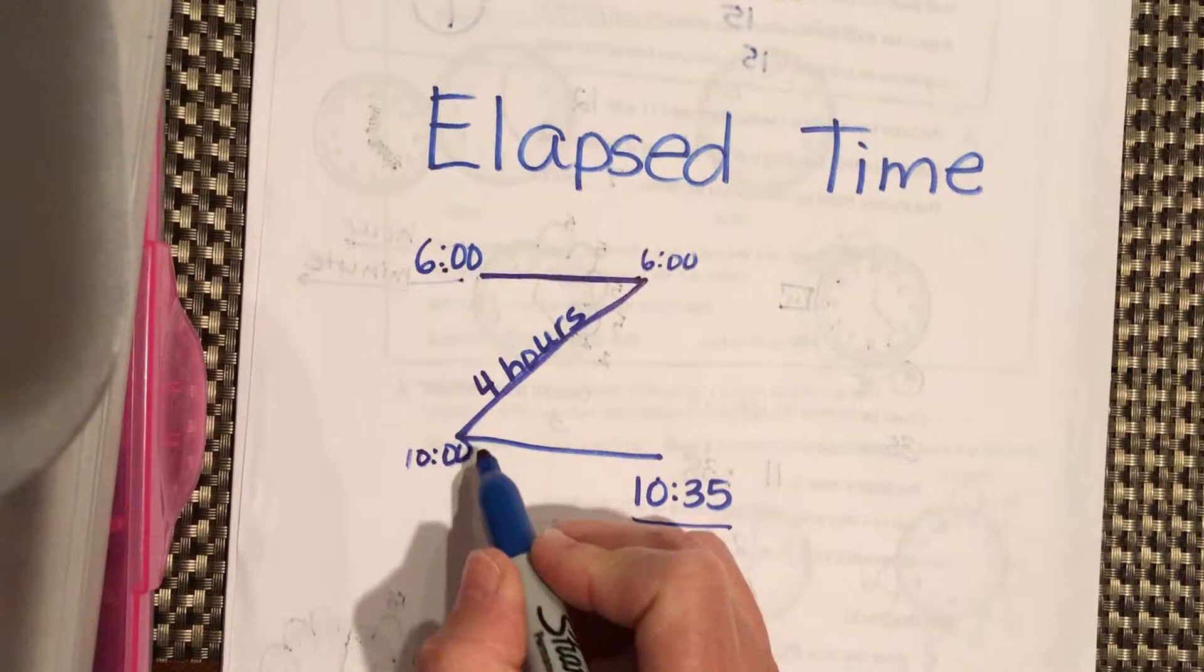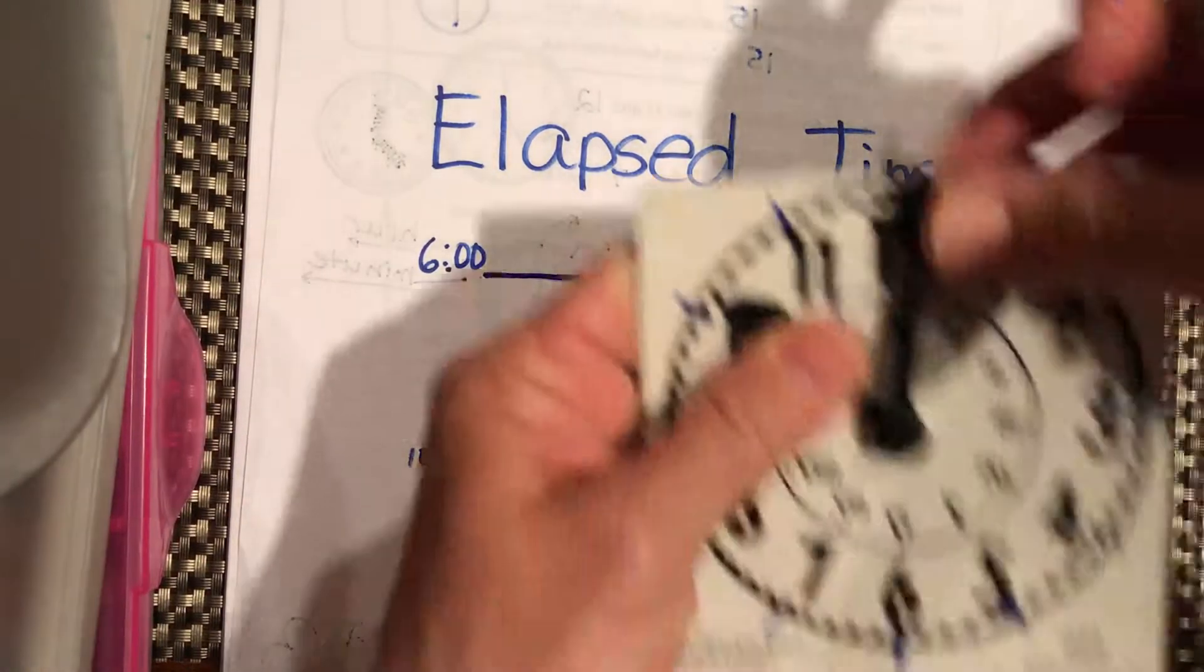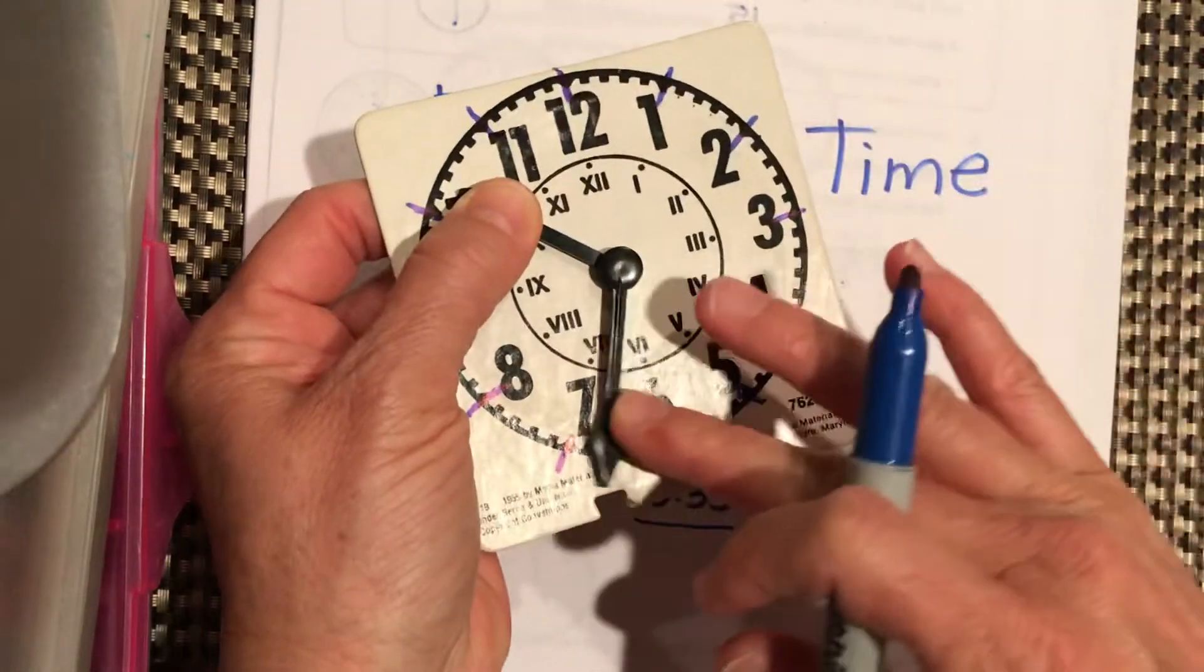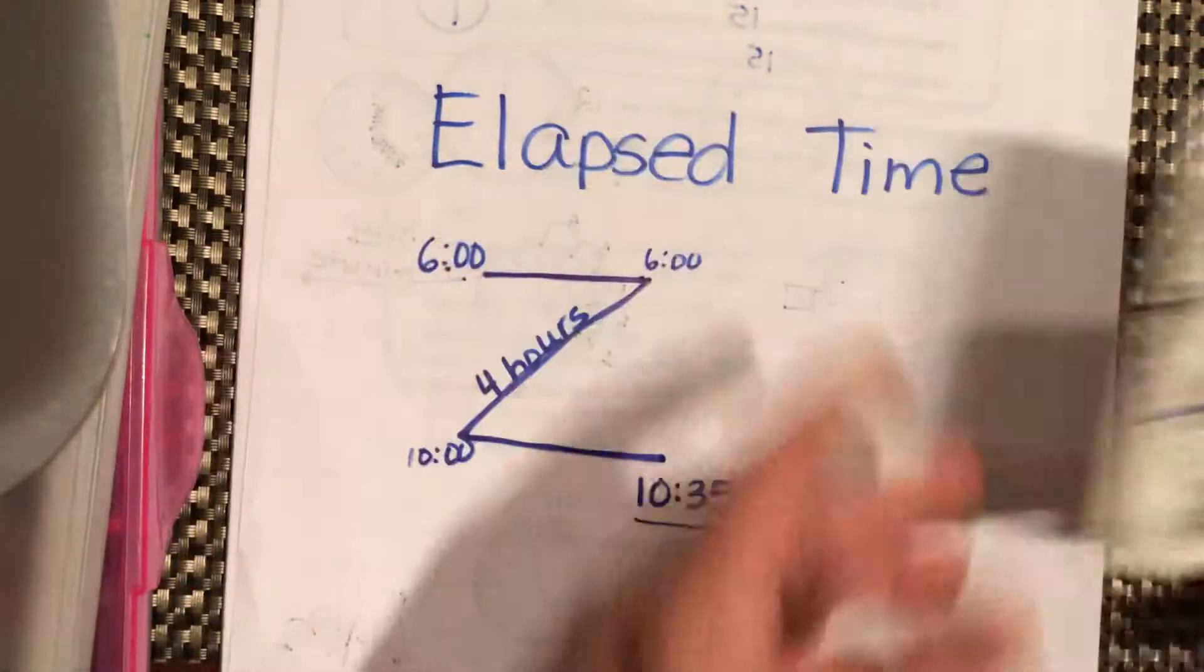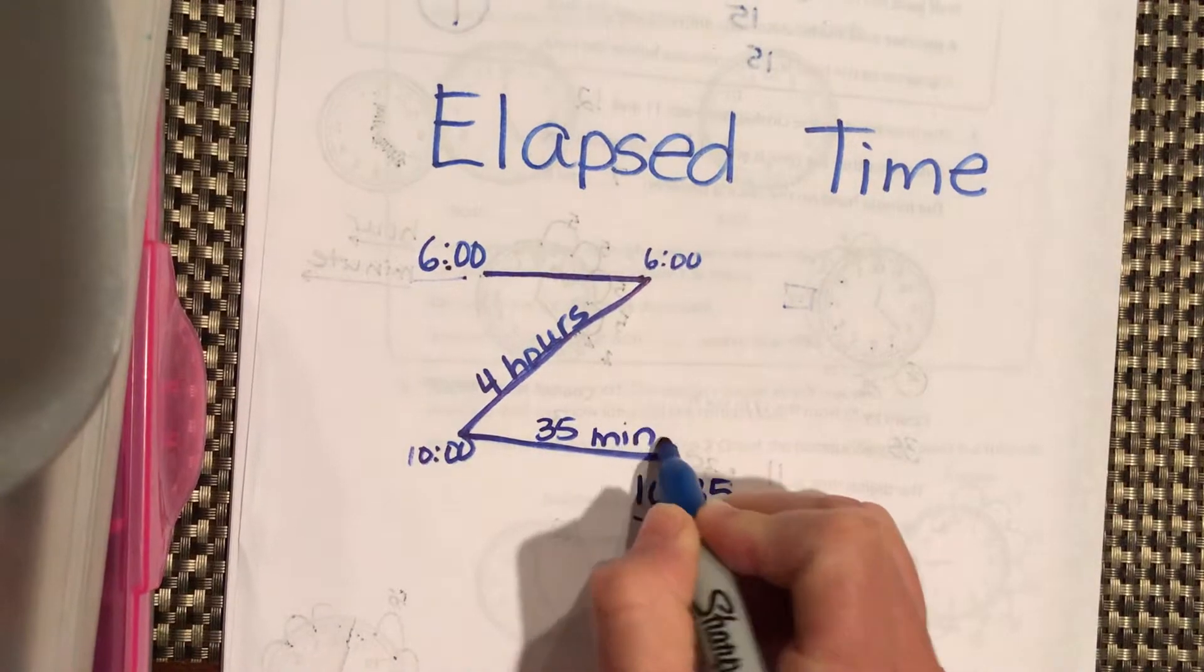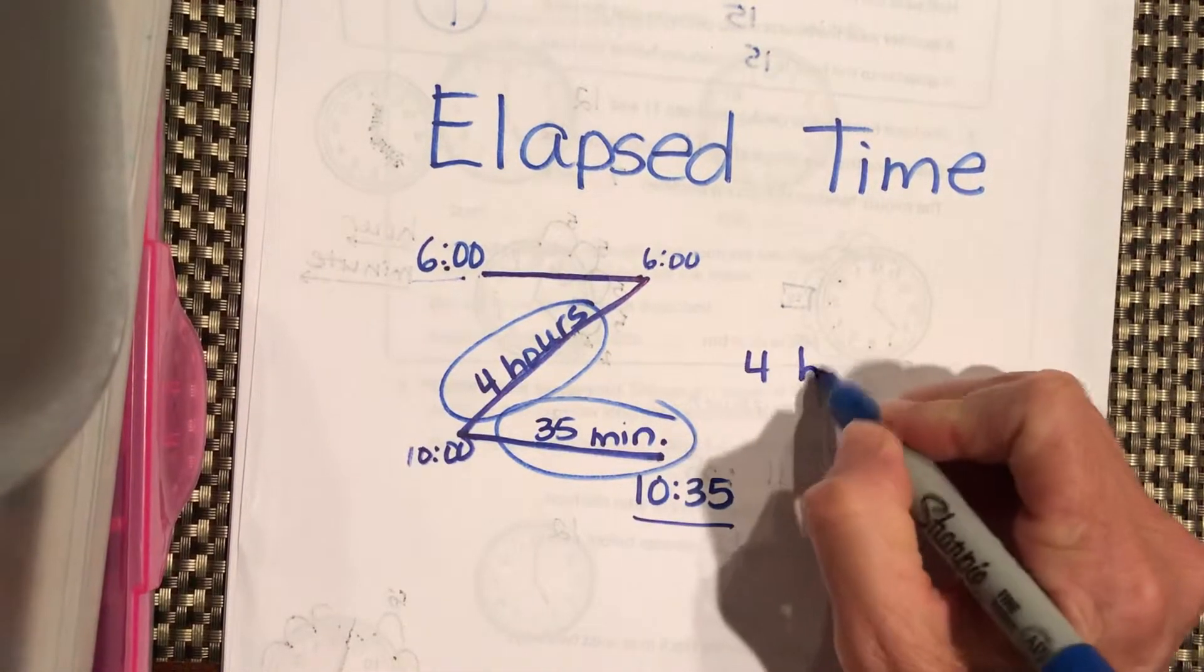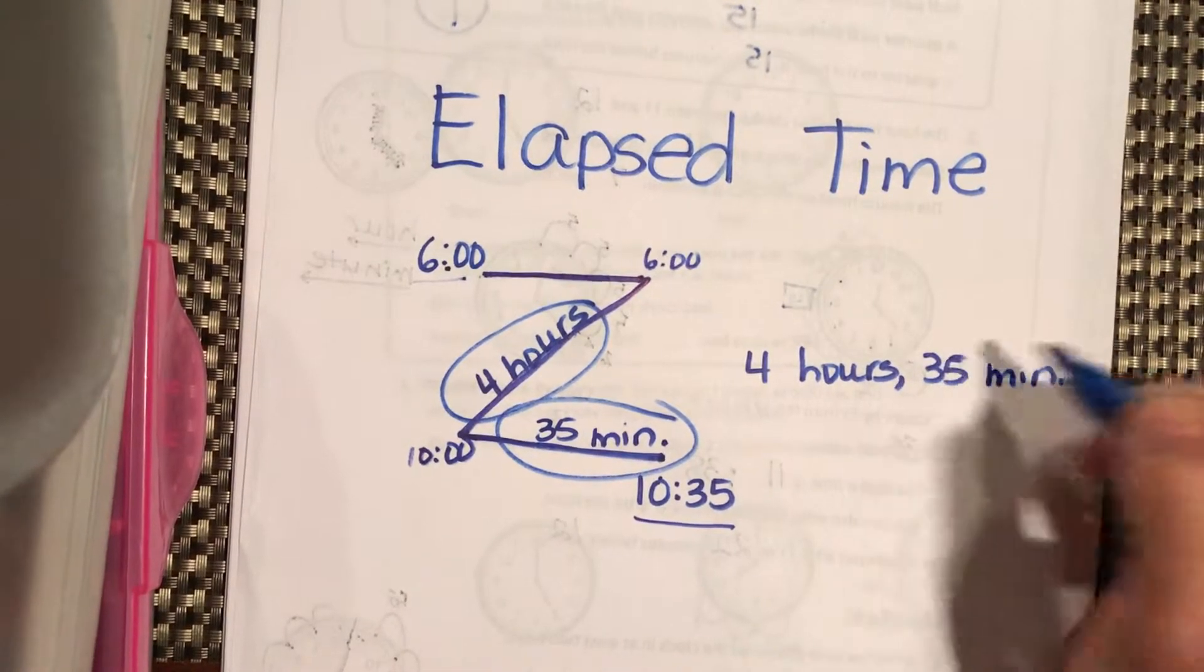And then, how many minutes from 10 o'clock until 10:35? From 10 o'clock until 10:35. So, we got 5, 10, 15, 20, 25, 30, 35. So, our totally elapsed time is 4 hours and 35 minutes. That's called the Z method.